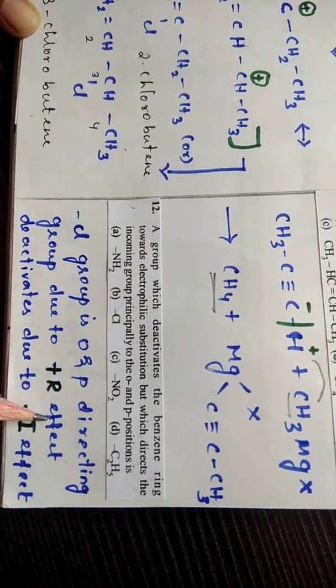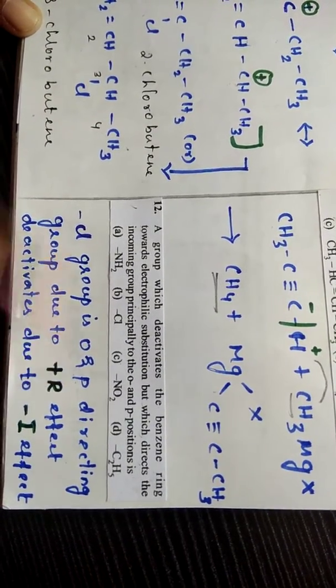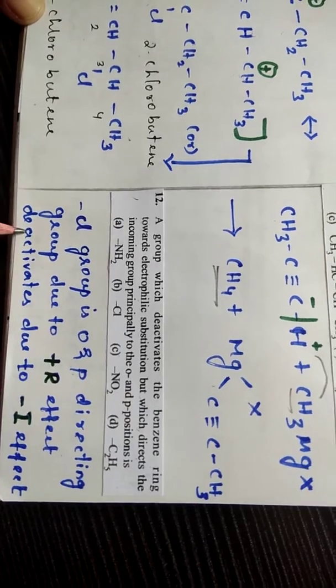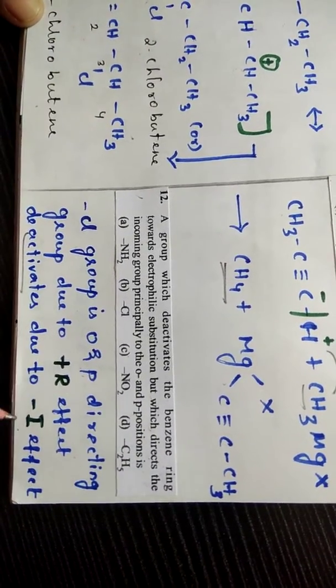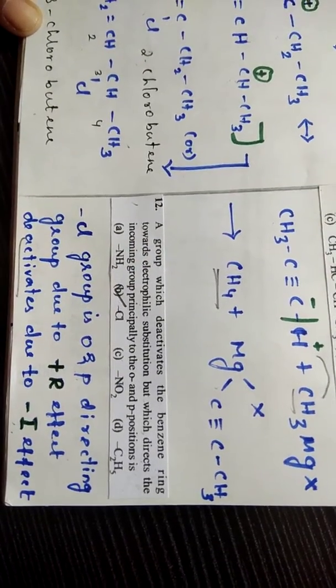Due to +R effect, that is directing ortho para positions of the incoming group. At the same time deactivates due to high electronegativity nature. That is -I effect. So your answer is option B students. Thank you.